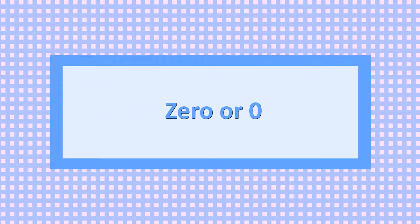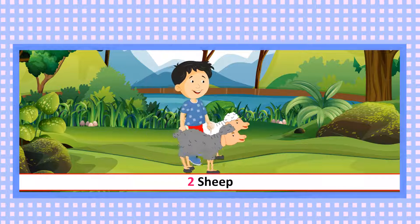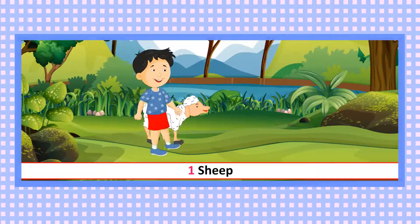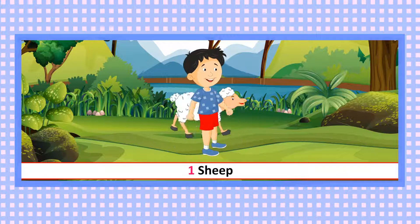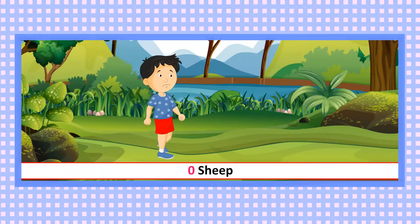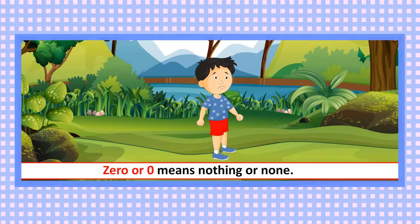Two sheep. One sheep. Zero sheep. Zero means nothing or none.